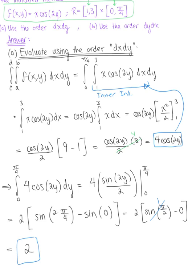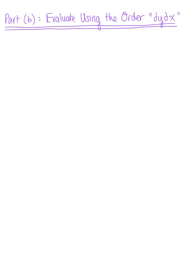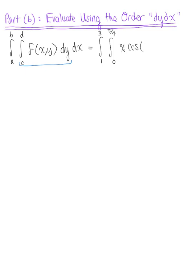We now want to perform this same integration using the opposite order, dy dx. In part B, we're asked to evaluate using the order dy dx. Keeping our definition in mind, this will be the integral from a to b, the integral from c to d of f(x,y) dy dx. Our outer bounds are the x bounds 1 to 3, the inner bounds are 0 to π/4, our y bounds. And our function is x cosine(2y), now dy dx.